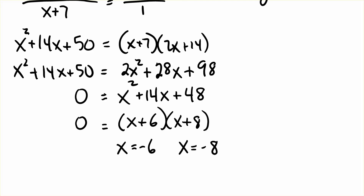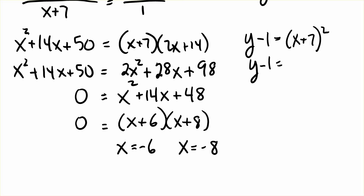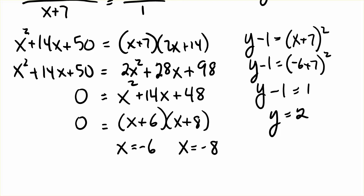We're going to plug those back into the original function: y minus 1 is equal to x plus 7 squared. Plugging in x equals negative 6, we have y minus 1 equals negative 6 plus 7 squared, which is 1 squared, so y minus 1 equals 1, giving y equals 2. Plugging in x equals negative 8: negative 8 plus 7 is negative 1, negative 1 squared is 1, y minus 1 equals 1, so y equals 2 as well.